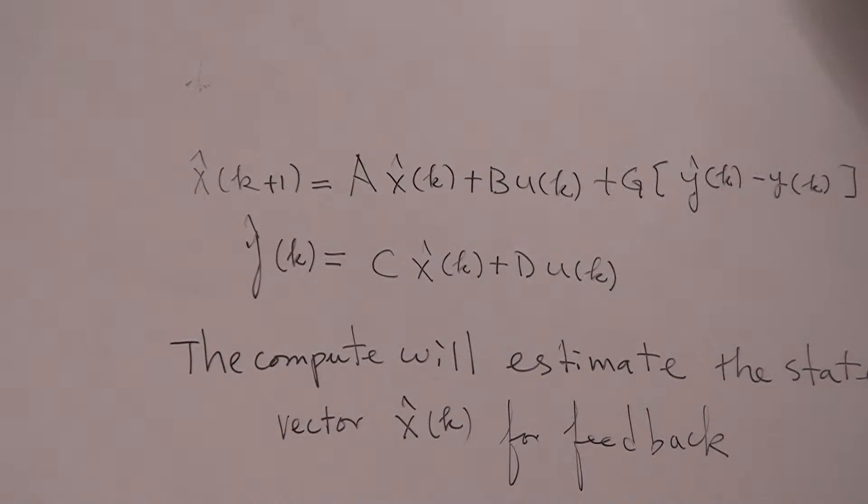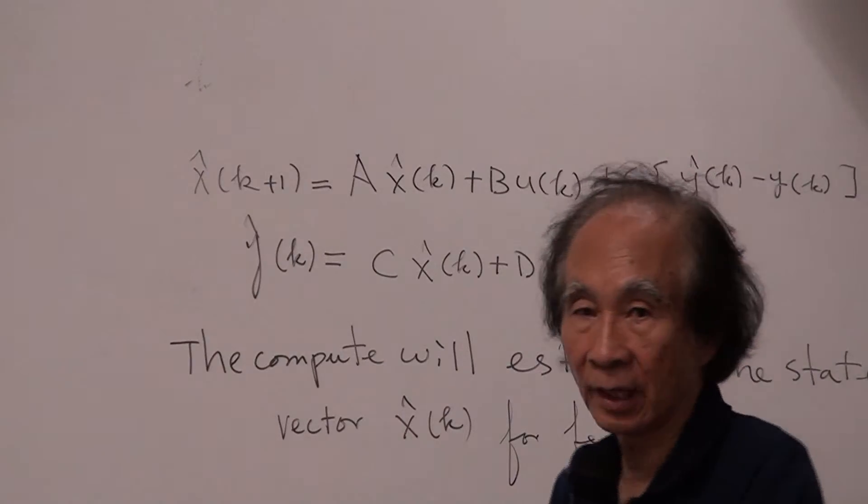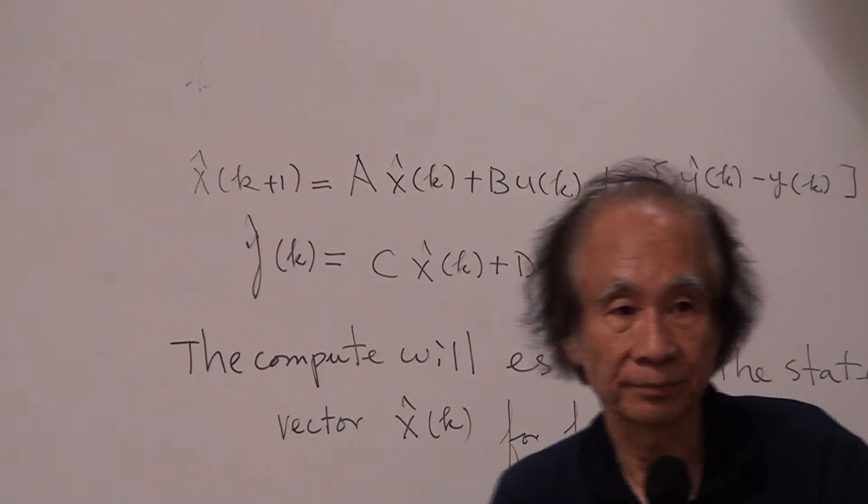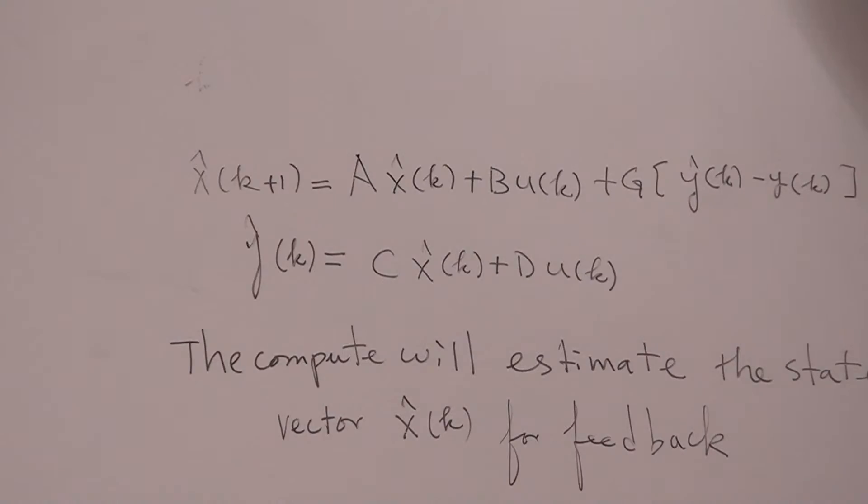So this control force is different from the control force you've seen in last slide. Now total input force will be u total k equal to e k plus u k, and u is F x hat. This is we call state feedback. Now you understand state feedback now.